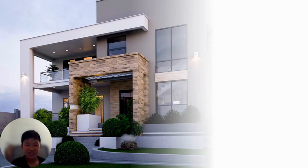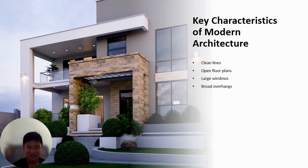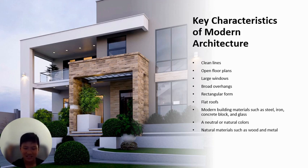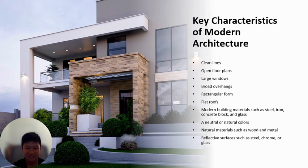The key characteristics of modern architecture include: clean lines, open floor plans, large windows, broad overhangs, rectangular form, flat roofs, modern building materials such as steel, iron, concrete block, and glass, neutral or natural colors, natural materials such as wood and metal, and reflective surfaces such as steel, chrome, or reflective glass.